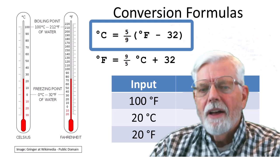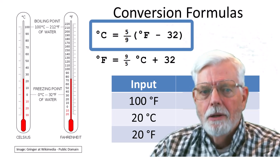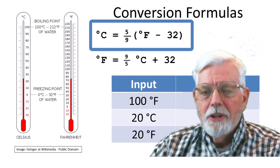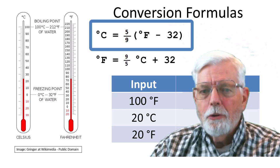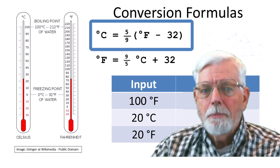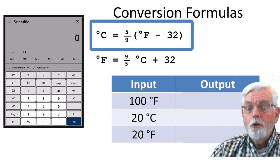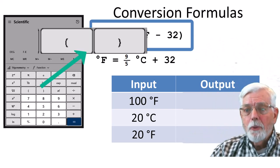Take the Fahrenheit value, subtract 32, then multiply by 5 and divide by 9. We need to place degrees Fahrenheit minus 32 in parentheses because the 32 needs to be subtracted before the multiplication occurs.